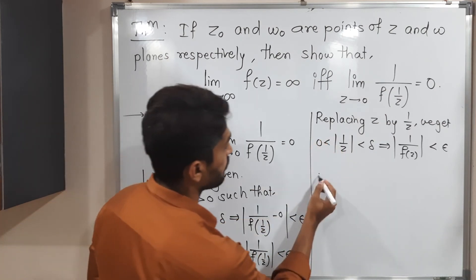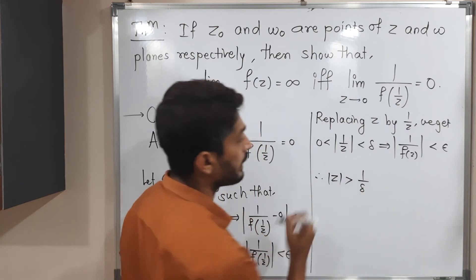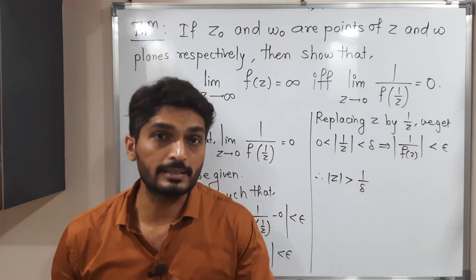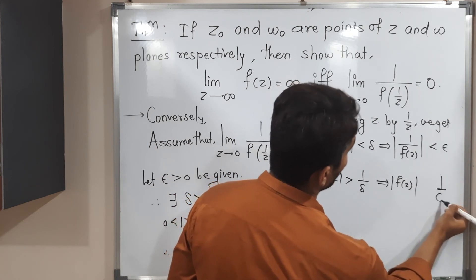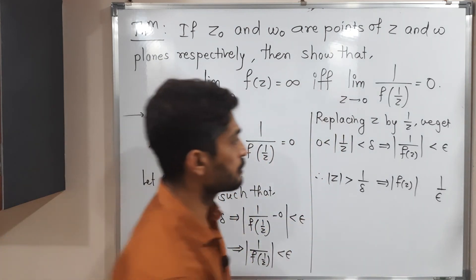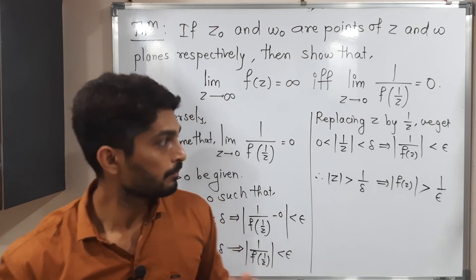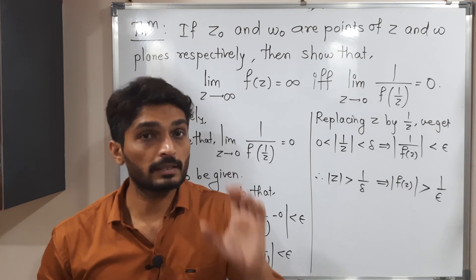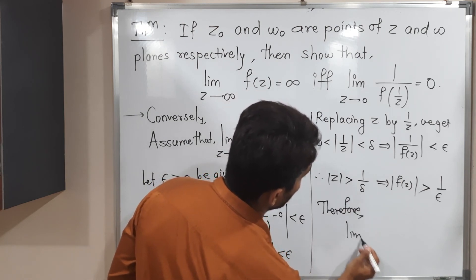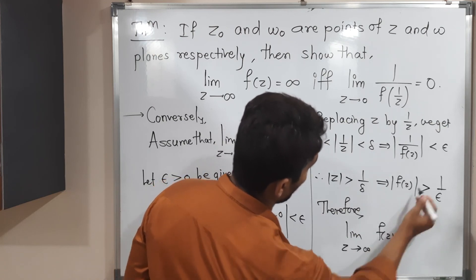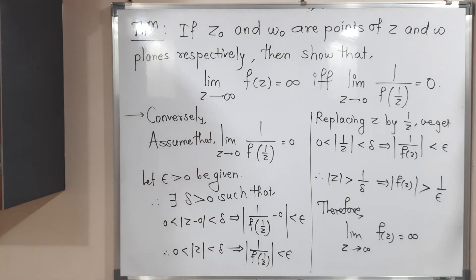Taking the reciprocal of both sides: mod z greater than 1/delta, and on the other side, taking reciprocal of 1/f(z) gives f(z), with the inequality reversed, so mod f(z) greater than 1/epsilon. This means z approaches infinity and f(z) approaches infinity. Therefore by definition, the limit as z approaches infinity of f(z) equals infinity. Proof is complete.